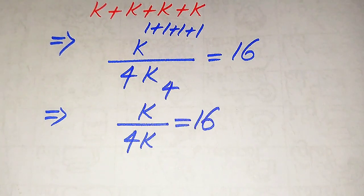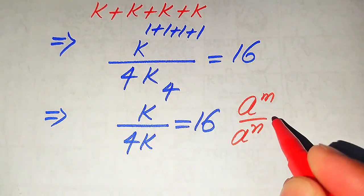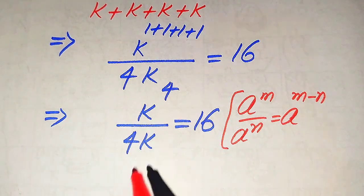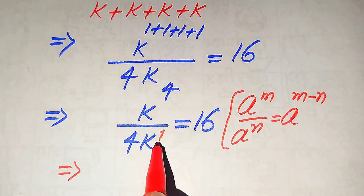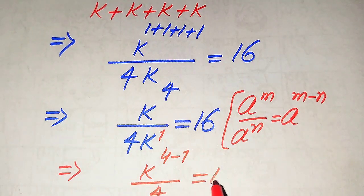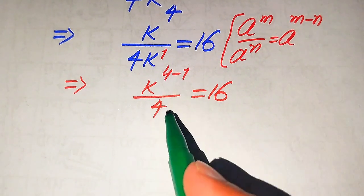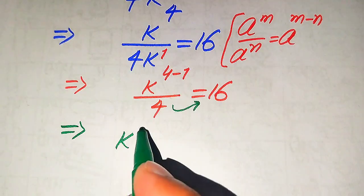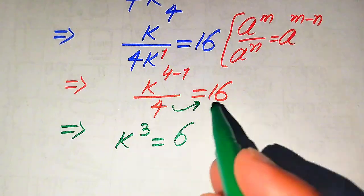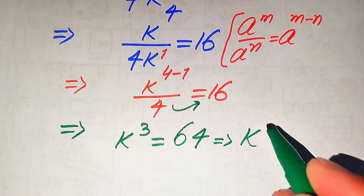In the next step we use the exponential law: a to the power of m divided by a to the power of n equals a to the power of m minus n. Applying this rule, the exponent of the denominator k is 1, so we move it upward and get k to the power of 4 minus 1 divided by 4 equals 16. Moving 4 to the right-hand side gives us k to the power of 3 equals 4 times 16, which equals 64.